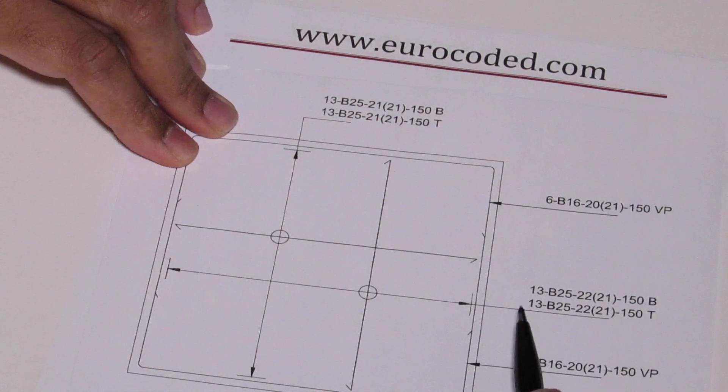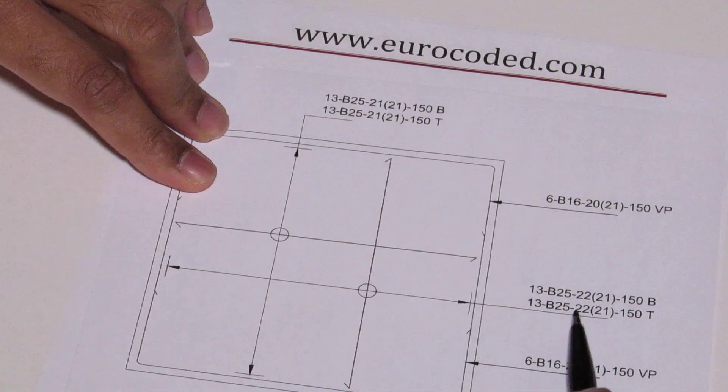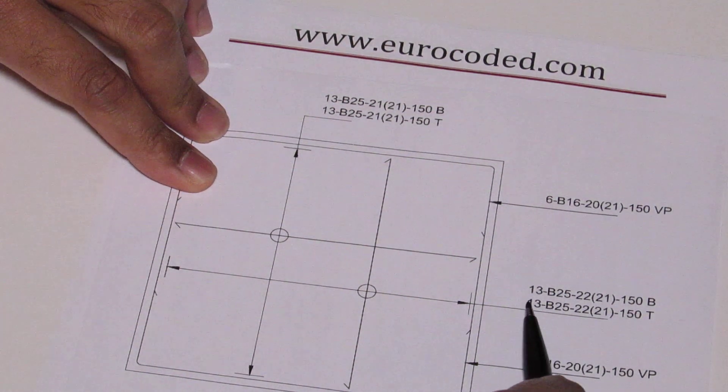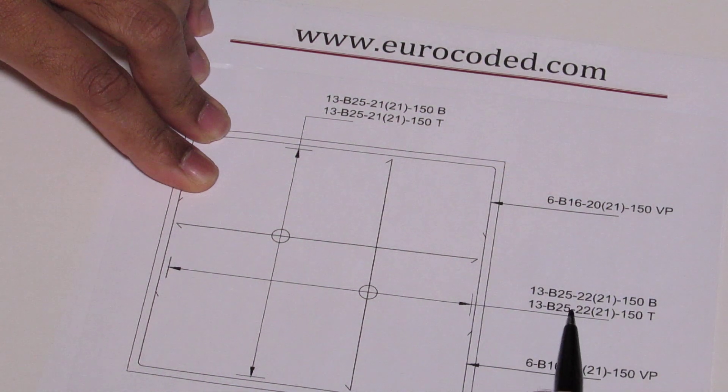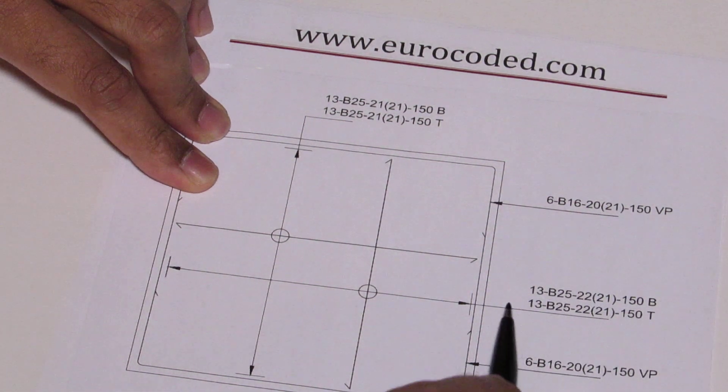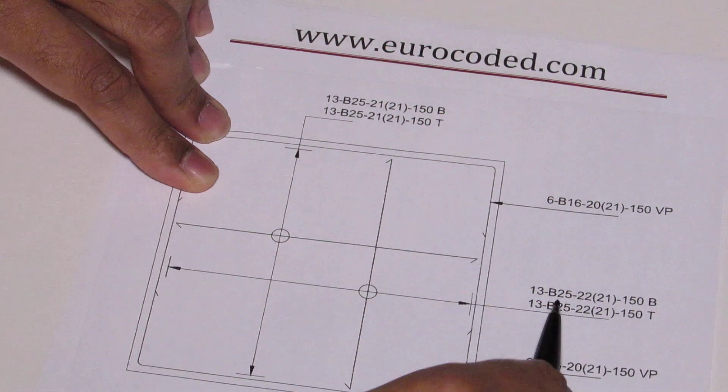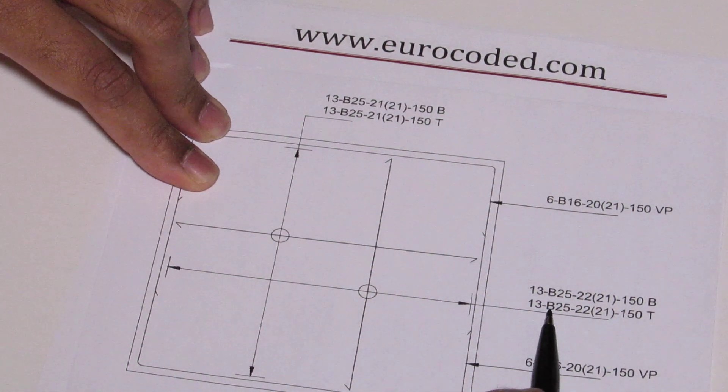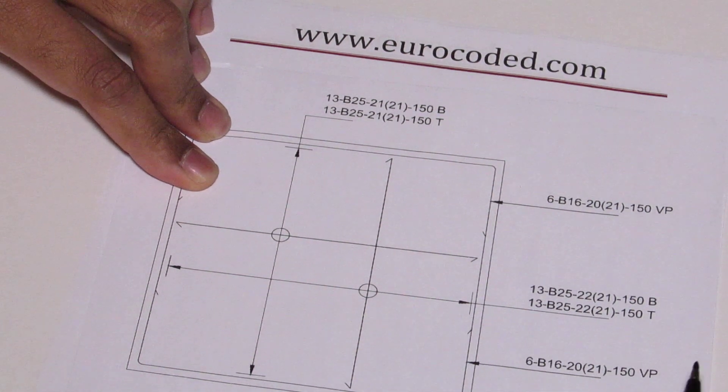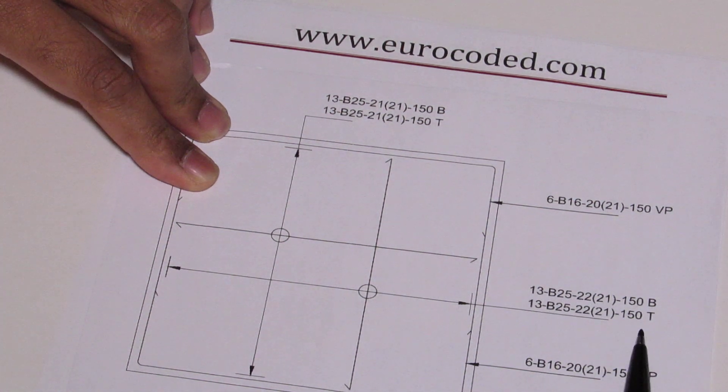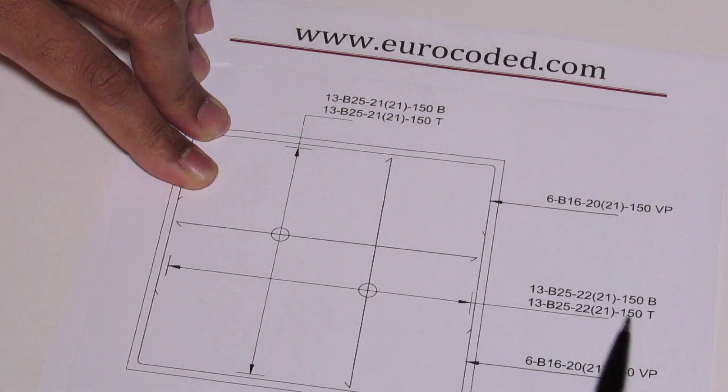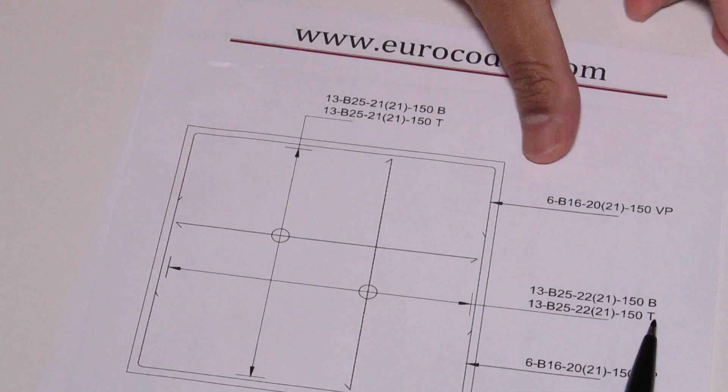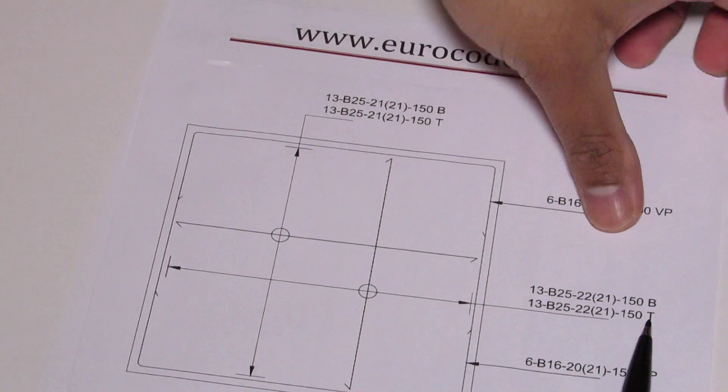And if you look in here it's similar, not the same, similar dimensions. A different bar mark of course. 13 number of them. B25, that means 25 millimeter diameter bars. And the shape code is 21. Spacing between bars is 150 millimeters. And in this particular scenario bar is at the top.